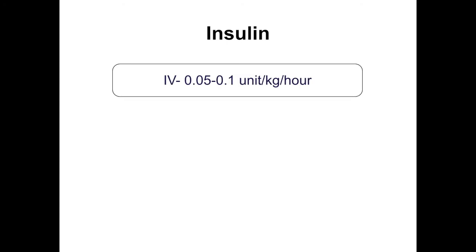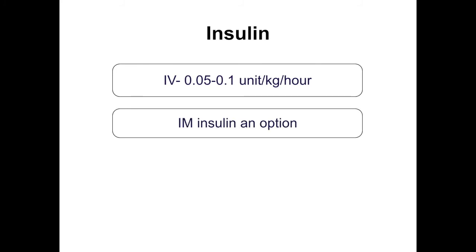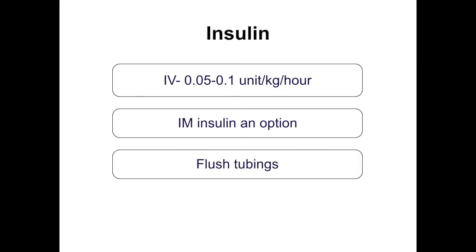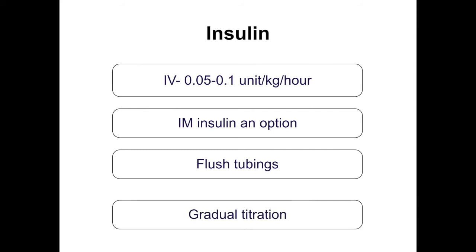Insulin management should only start after the initial 1-2 hours of hydration, as a continuous IV infusion. Start at 0.1 unit/kg/hour, except for malnourished individuals and neonates where 0.05 unit/kg/hour is recommended. Multiple IM injections of rapid-acting insulin at 0.3 unit/kg are an option only where other methods are unavailable. Always flush the tubing before infusion, as insulin can bind to tubing, causing delayed delivery. Titration should be gradual.